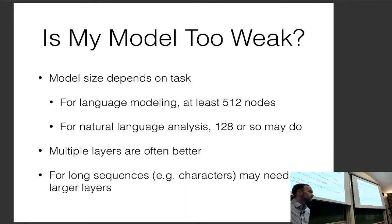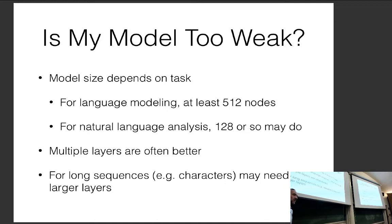Is there any intuition toward adding more units to a layer versus adding more layers? In the end it's largely empirical, but as a rule of thumb: I've very rarely seen layers of more than about a thousand nodes give you much better results. However, it seems like the deeper you make your models, the better things get if you have sufficient training data.